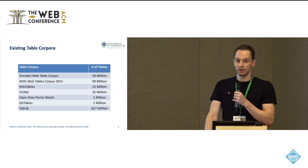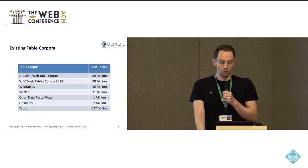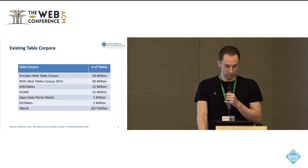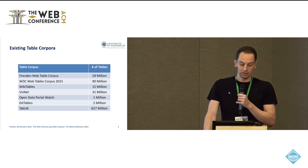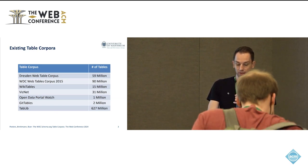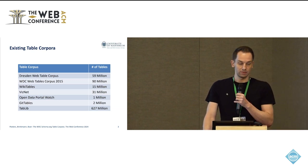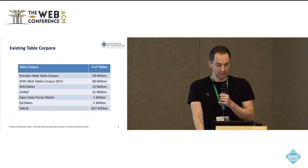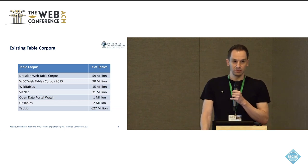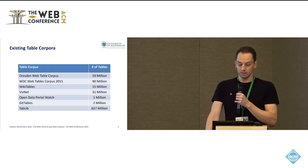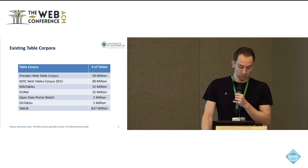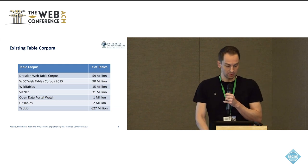When you look at the names of the corpora you can usually already see where they are sourced from. We have Web Table Corpora, which are scraped from HTML pages, we have WikiTables, which is a corpus scraped from Wikipedia, and also something like GitTables, where the main source is GitHub. The size of these corpora is usually somewhere in the single to double digit millions, and there's also quite a new corpus, TupleLip, which is actually quite large with over 600 million tables.